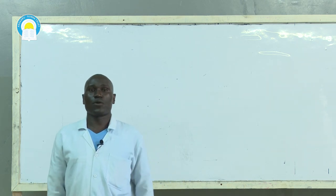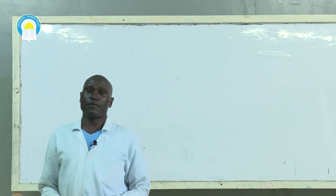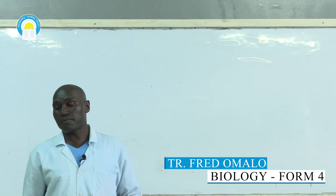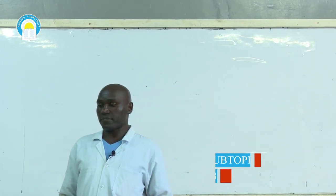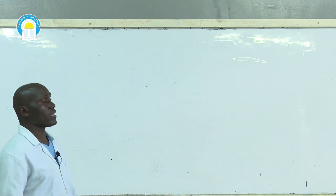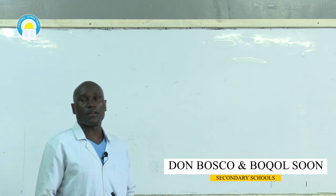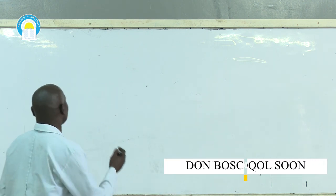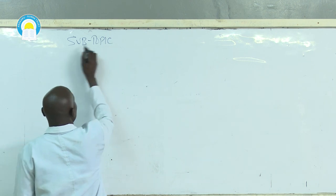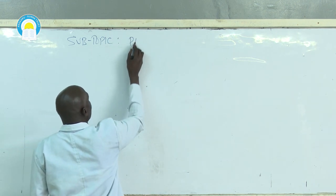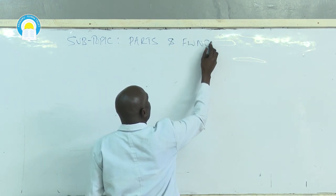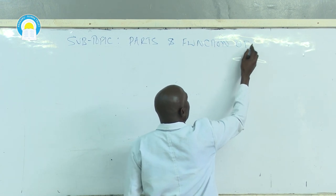Welcome everyone. We are to continue with our topic which was reception, response and coordination in animals. This would be the continuation of the subtopic that we started on, which is the parts and functions of the human brain.